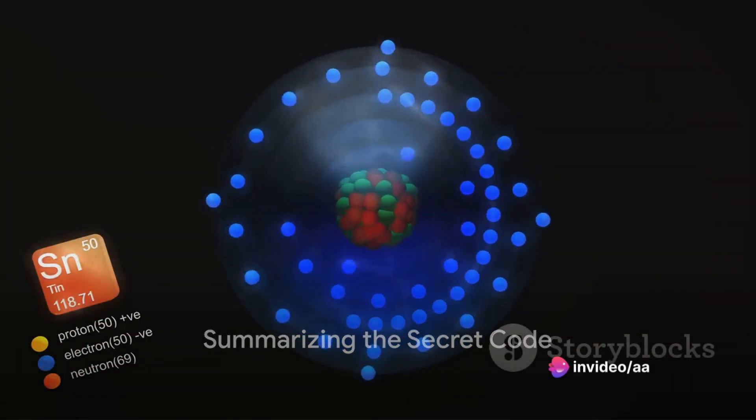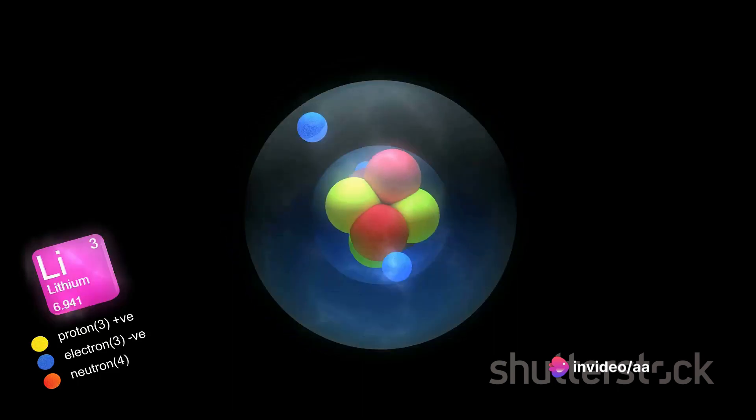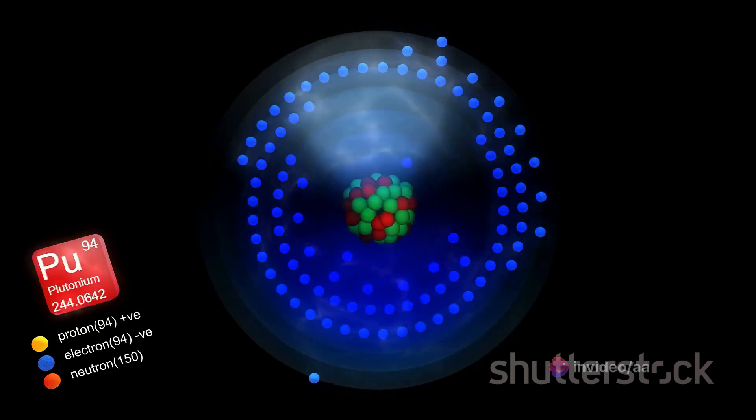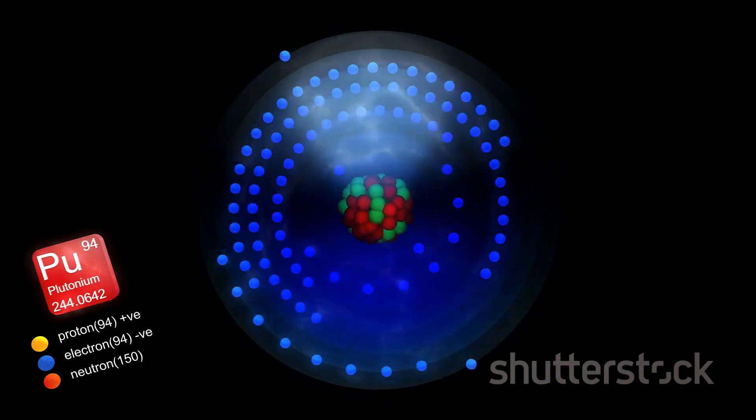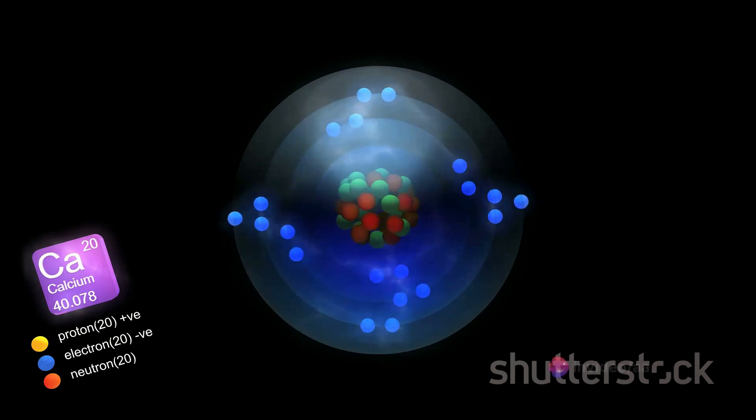Let's summarize. The atomic number is the unique identifier of an element, determined by the number of protons in its nucleus. It's like the ID card for elements. On the other hand, the atomic mass is the total weight of an atom, primarily contributed by the protons and neutrons in the nucleus.